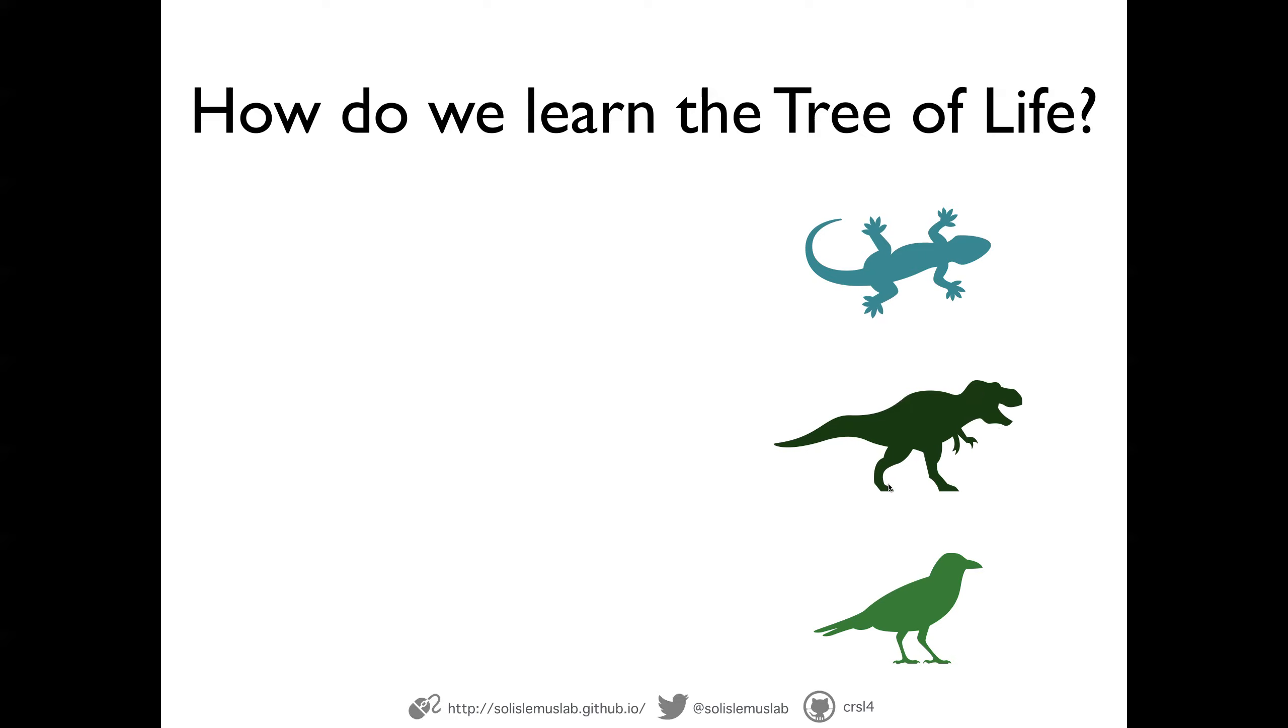But normally, it would just be extant species. We want to know what is the tree that represents the evolution of these species. And this is one example of such tree where we have internal nodes here in gray that represent common ancestors. So the one here that I'm showing is the common ancestor of birds and dinosaurs.